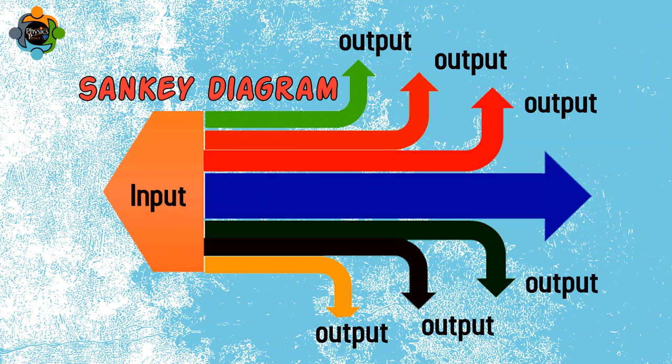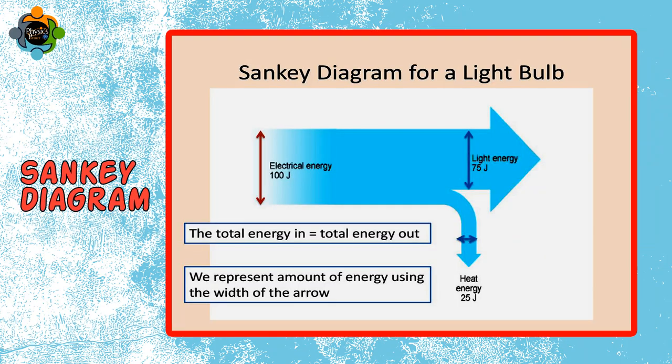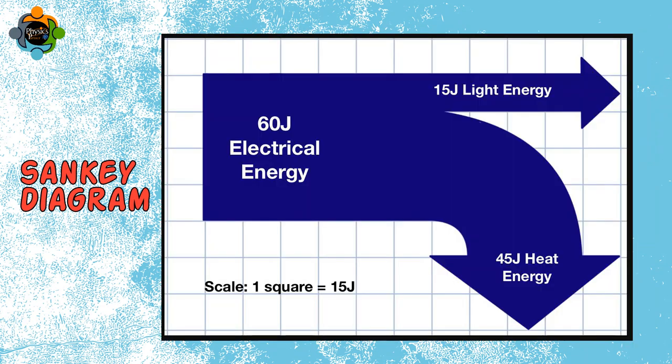Let's discuss the Sankey diagram. A Sankey diagram is a visual representation used to show the flow of energy. It consists of arrows that represent energy input, energy losses, and useful energy output. The width of the arrows is proportional to the quantity of energy flow, providing a clear visualization of how energy is transferred from one source to another.